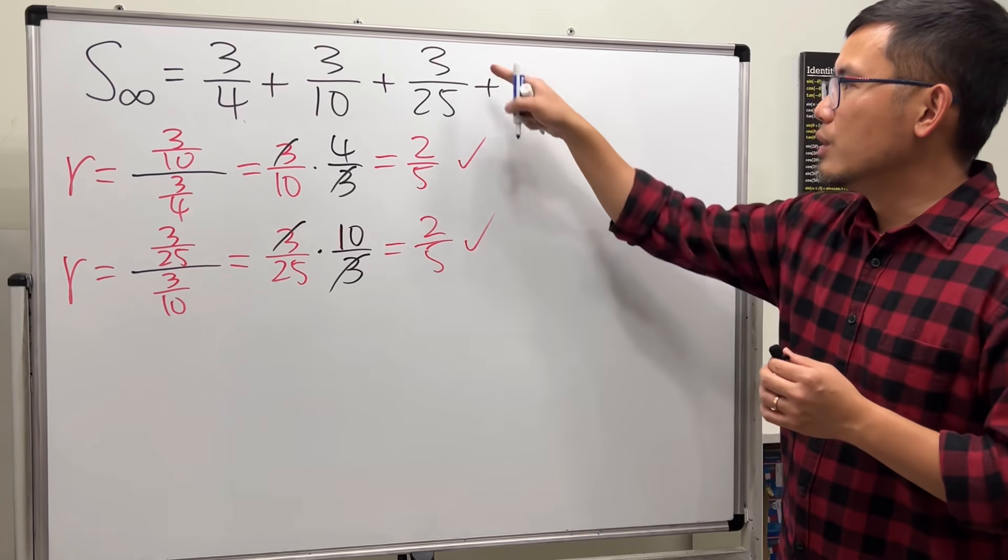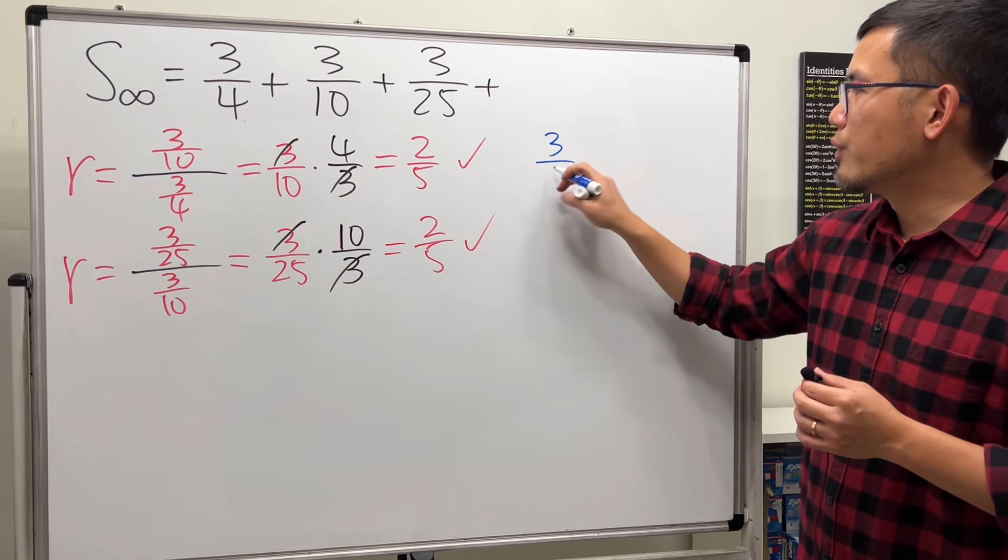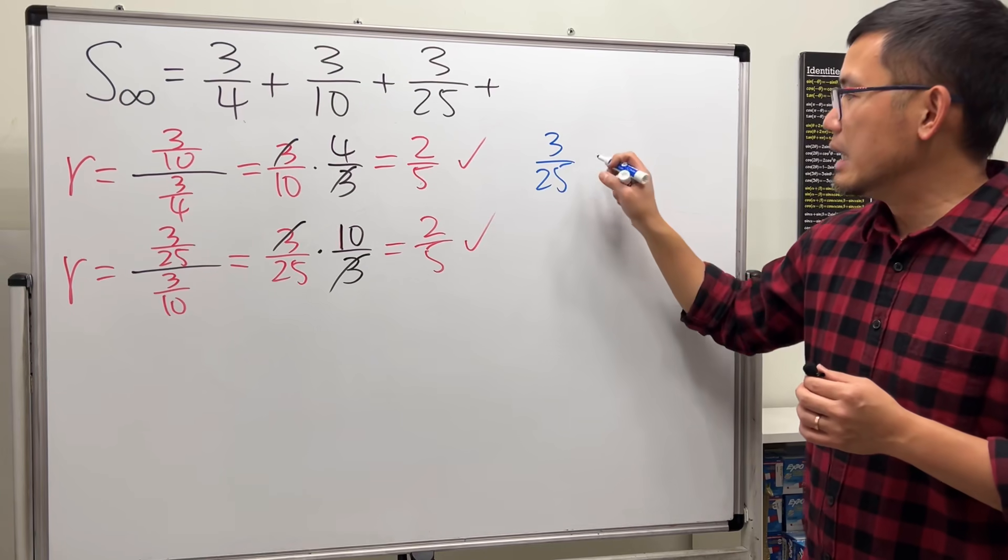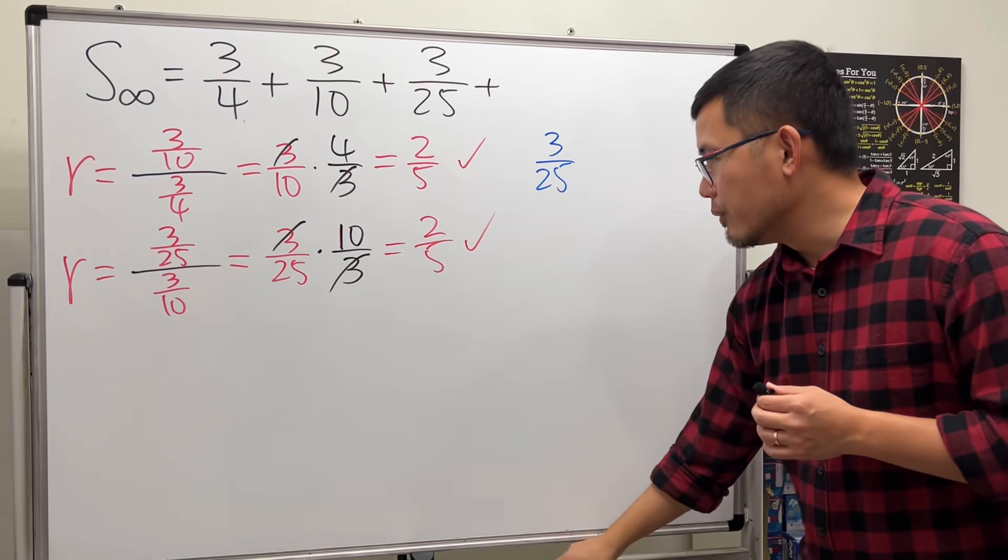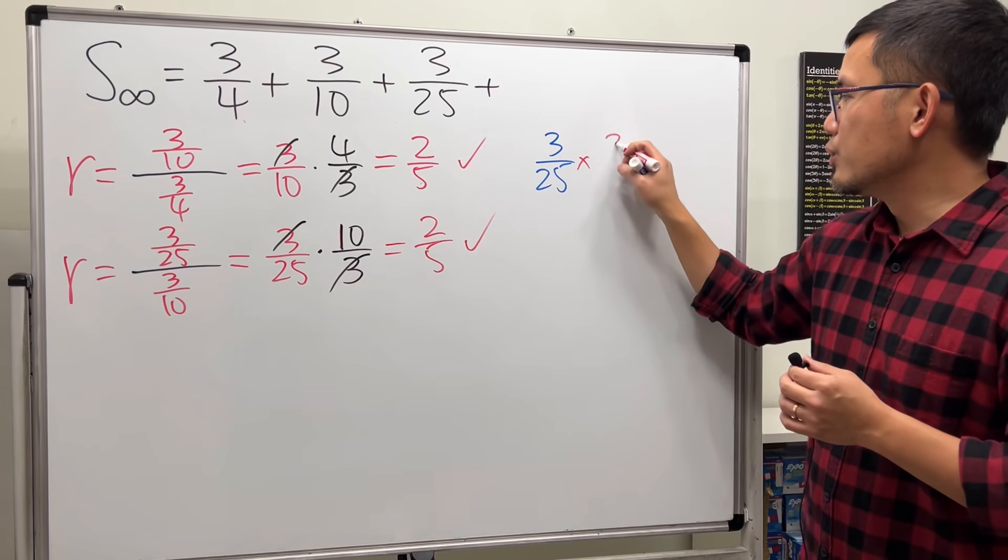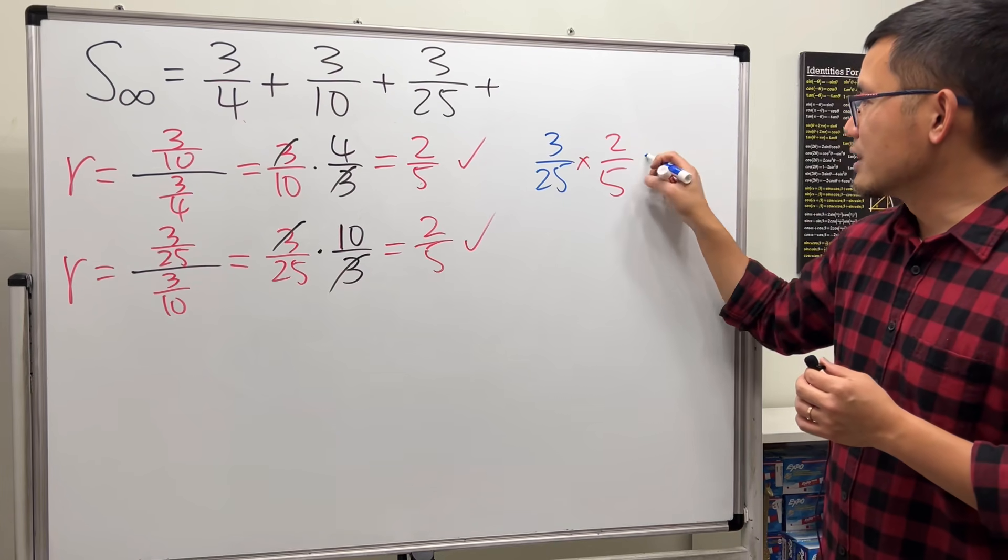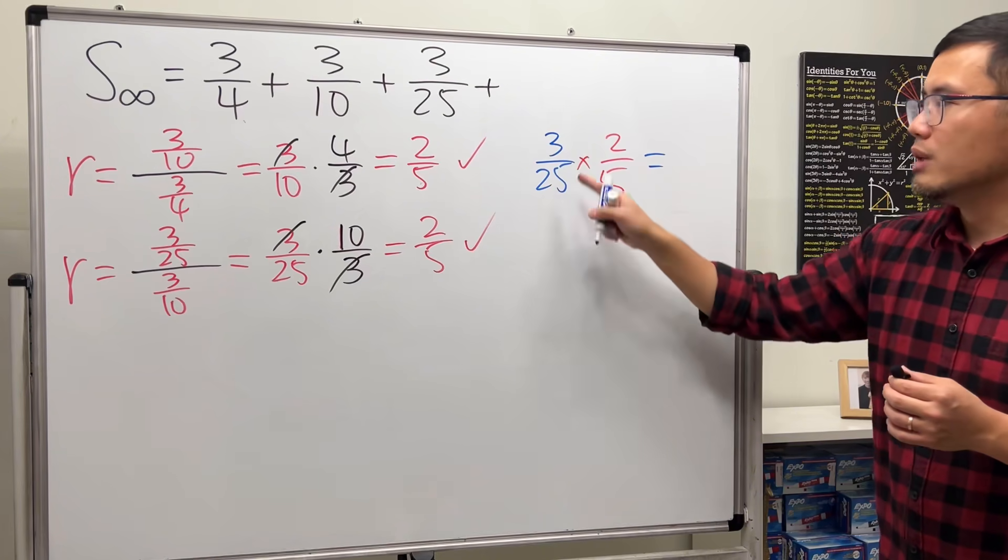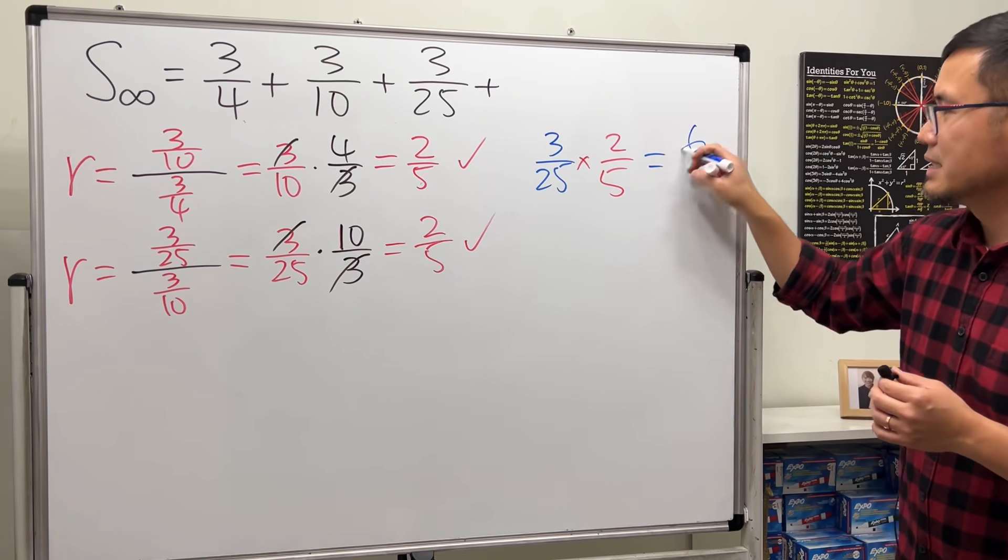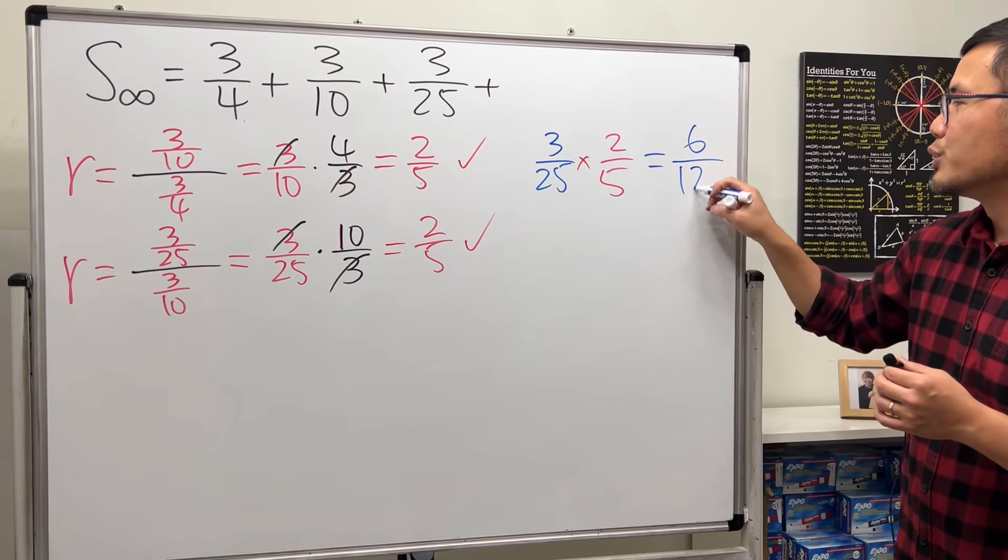So just for fun, let's figure out what the next term is. We will have to do 3 over 25 times the common ratio, which is 2 over 5. If you work that out, cannot reduce anymore, so you have this times that which is 6, and this times that is 125.